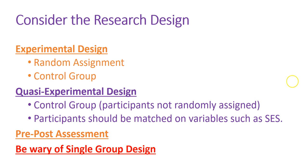A quasi-experimental design has a control group but with participants who are not randomly assigned — that is kind of questionable research if you find that. You should also note that participants in the assessment groups should be matched on all kinds of variables, including their SES and language background. There should be a pre- and post-assessment in the research study, and you want to be wary of single-group design studies — for example, if it only shows what happened in one school in Arizona, how is that going to work in Maryland? You want research conducted with different groups of students.